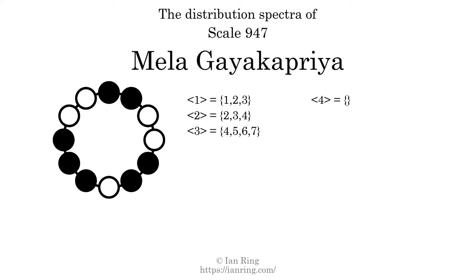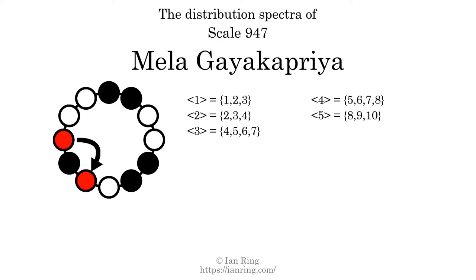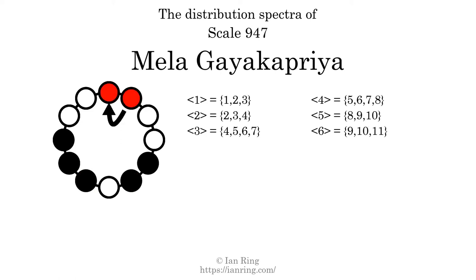The generic interval of four scale steps comes in four different specific interval sizes: five semitones, six semitones, seven semitones, and eight semitones. The spectrum width of this generic interval is three. The generic interval of five scale steps comes in three different specific interval sizes: 8 semitones, 9 semitones, and 10 semitones. The spectrum width of this generic interval is 2. And finally, the generic interval of 6 scale steps comes in three different specific interval sizes: 9 semitones, 10 semitones, and 11 semitones. The spectrum width of this generic interval is 2.